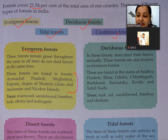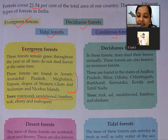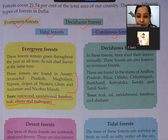Trees found in evergreen forests include rosewood, sandalwood, bamboo, teak, ebony and mahogany. Ye saare pedo ke naam hain jo Evergreen forest mein aate hain.